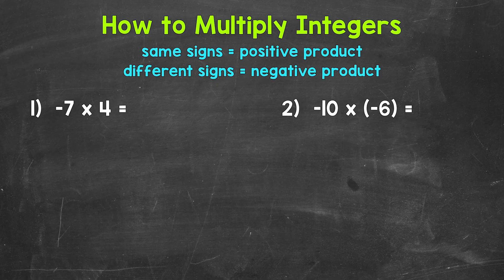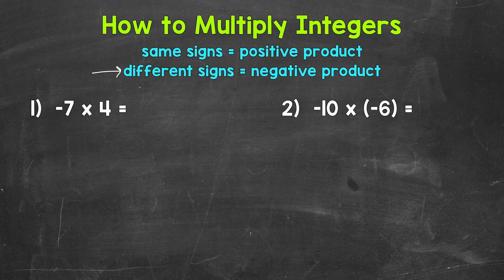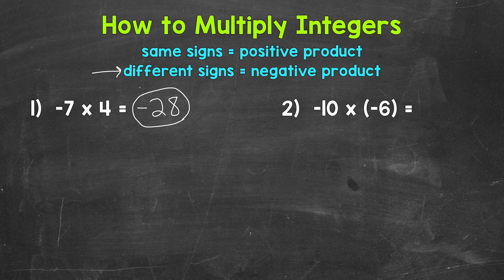Let's jump into number 1 where we have negative 7 times positive 4. We have a negative times a positive, so we are working with different signs. When we're working with different signs, this tells us our product — the answer to a multiplication problem — will be negative. So negative 7 times 4: 7 times 4 is 28, and we know this product is negative because we are working with different signs. So this is negative 28, and that's our final answer. To recap, different signs equal a negative product.